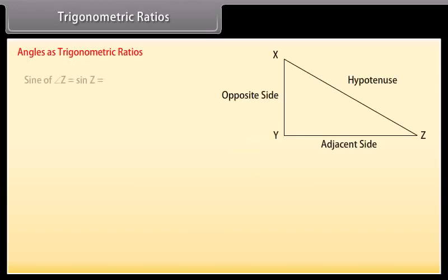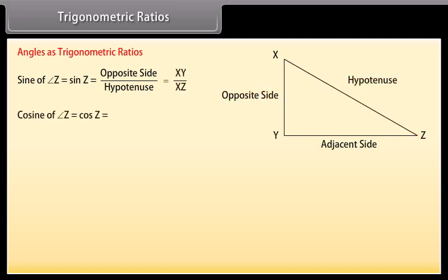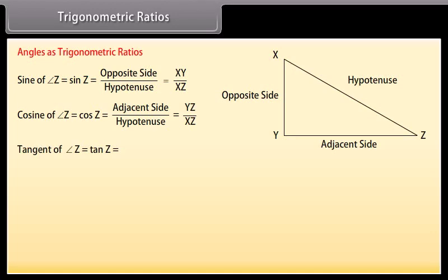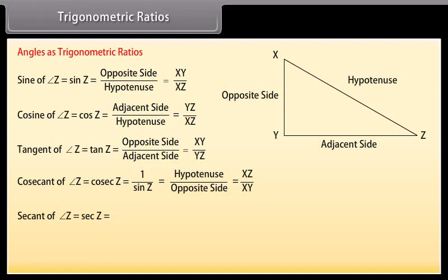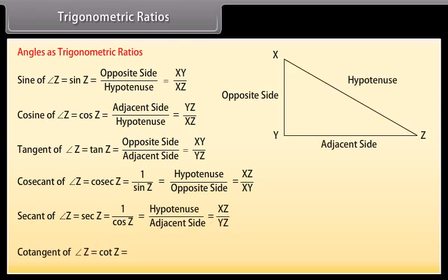Let us now express different measures of angle Z as ratios of the sides of triangle XYZ. Sine of angle Z: sin Z equals opposite side upon hypotenuse. Cosine of angle Z: cos Z equals adjacent side upon hypotenuse. Tangent of angle Z: tan Z equals opposite side upon adjacent side. Cosecant of angle Z: cosec Z equals 1 upon sin Z, equals hypotenuse upon opposite side. Secant of angle Z: sec Z equals 1 upon cos Z, equals hypotenuse upon adjacent side. Cotangent of angle Z: cot Z equals 1 upon tan Z, equals adjacent side upon opposite side.